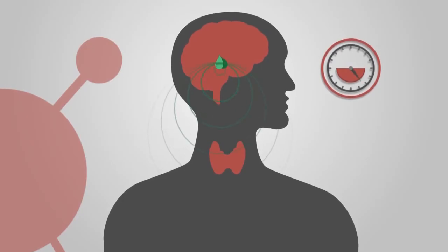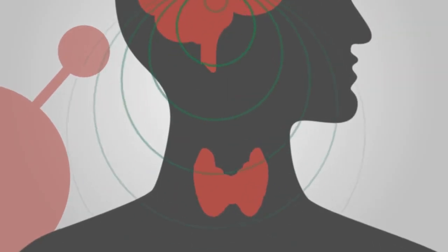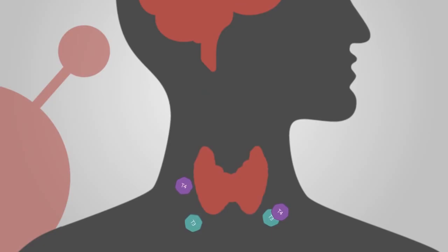If the levels drop, the pituitary sends a signal to the thyroid gland, which then begins releasing T3 and T4 into the bloodstream.